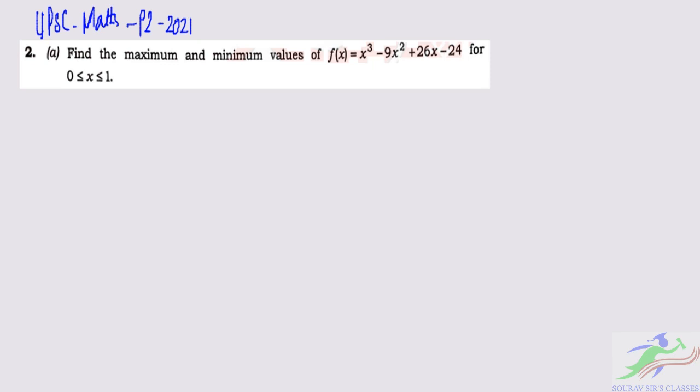As you know, we have solved the previous part, question 1 from this paper 2. Now it is time to move forward and we are solving question number 2a. The question is asking to find the maximum and minimum values of f(x)=x³-9x²+26x-24 for 0≤x≤1.